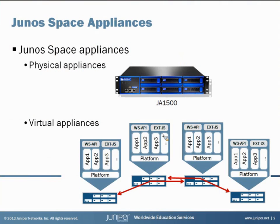There are two Juno Space appliances. There's the physical appliance known as the JA1500 and there's also the Juno Space virtual appliance, which is a software image file that you download from Juniper's website and install on a supported server platform.